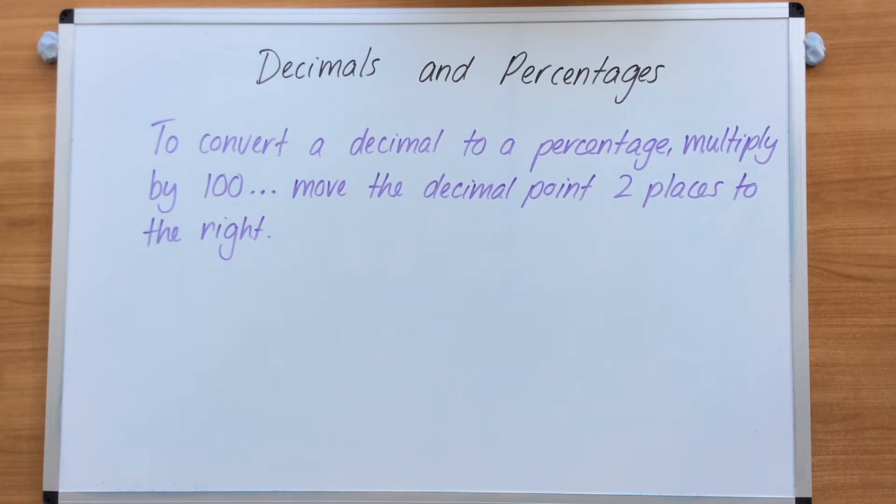Now we're going to do the opposite, go from decimal to percentage, and in doing so you must multiply by 100. That means moving the decimal point two places to the right.